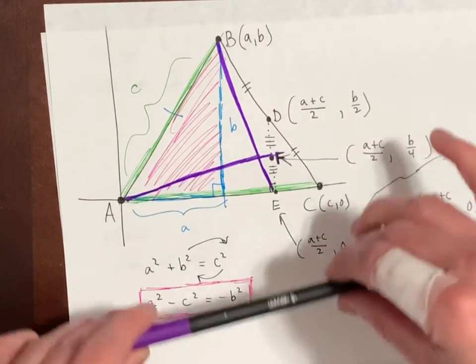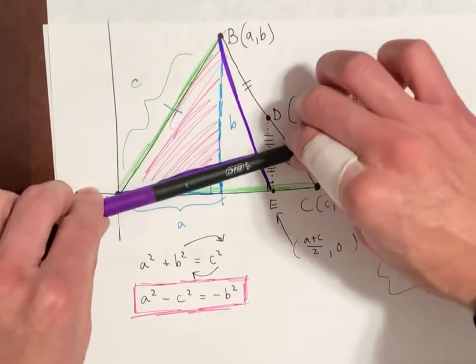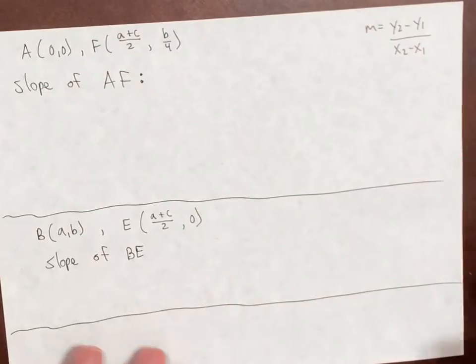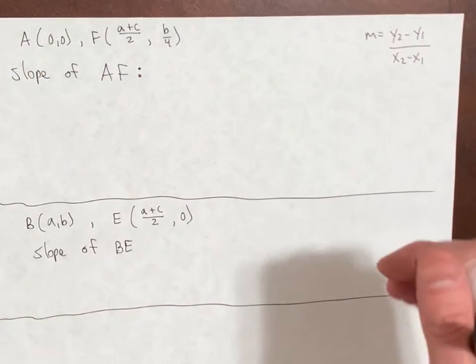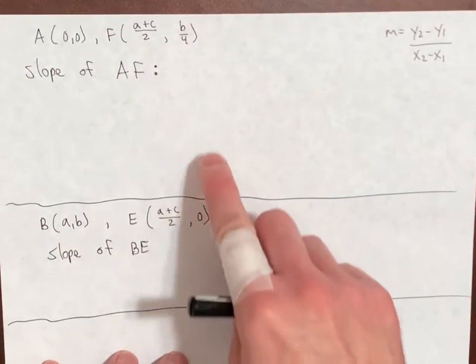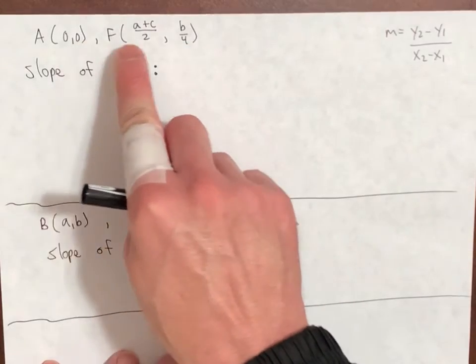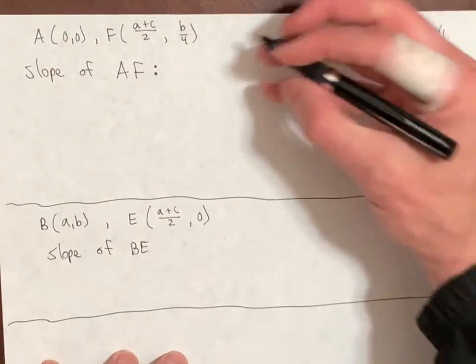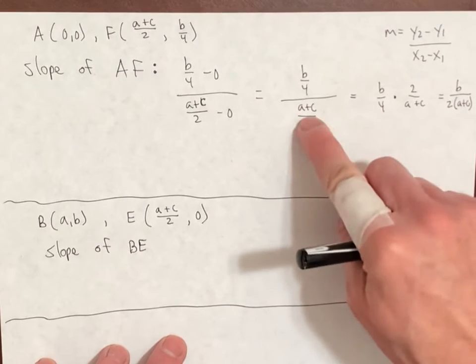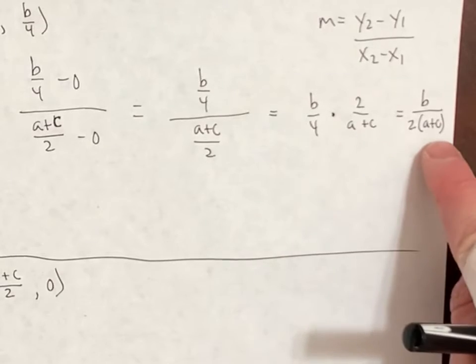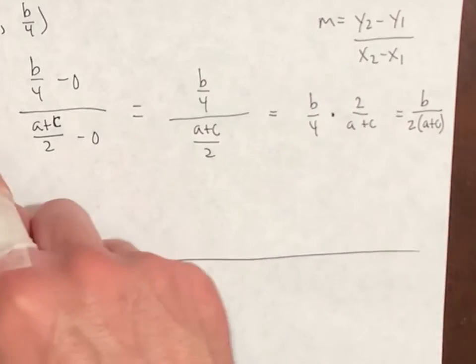I want to find the slope of this guy and the slope of this one. For slope, it's M equals Y2 minus Y1 over X2 minus X1. So to find the slope of AF, you can go Y2 minus Y1 over X2 minus X1. And here's what I got. Instead of dividing, I multiply by a reciprocal, and I got this here for the slope of AF.